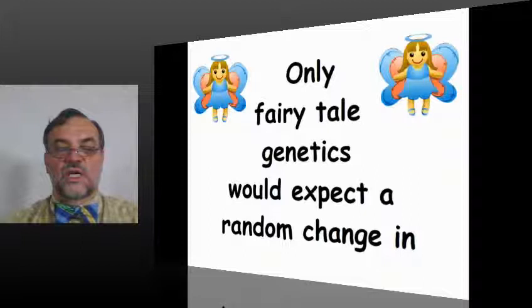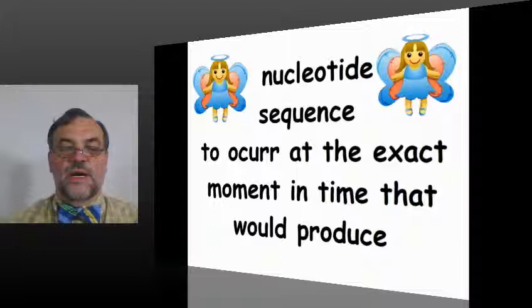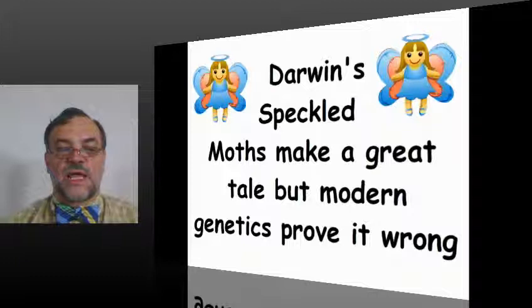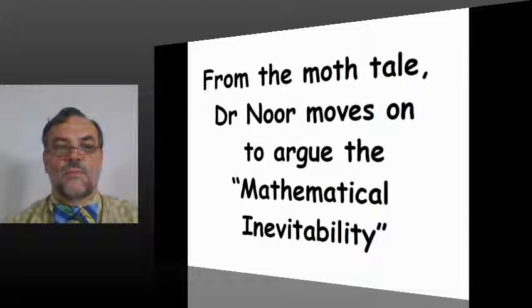Also, only a fairy tale genetics would expect a random change in nucleotide sequence to occur at the exact moment in time that would produce black speckled moths with selective advantage over white speckled moths. Darwin's speckled moths make a great tale, but modern genetics prove it wrong.